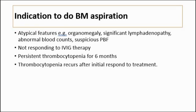The indications for bone marrow aspiration include atypical features such as palpable organomegaly, significant lymphadenopathy, abnormal blood counts, or a suspicious peripheral blood film with abnormal cells. Other indications include the patient not responding to intravenous immunoglobulin therapy, persistent thrombocytopenia for 6 months, or thrombocytopenia recurring after an initial response to treatment.